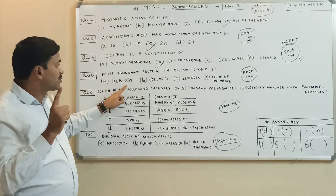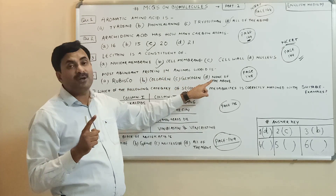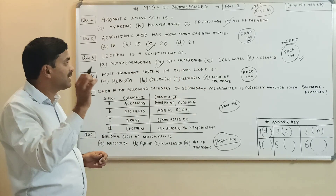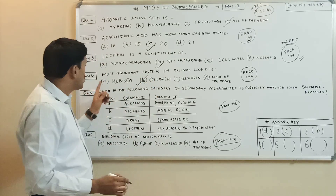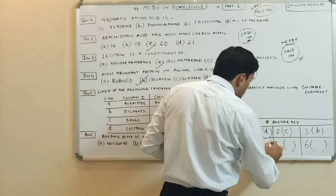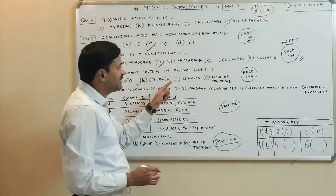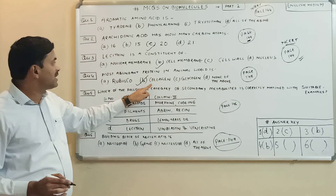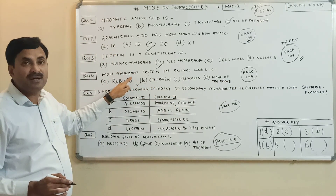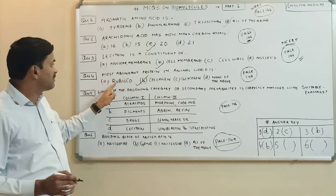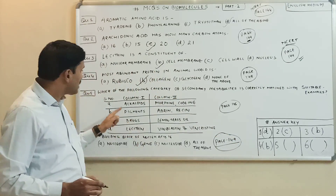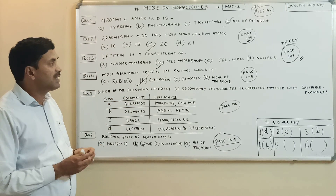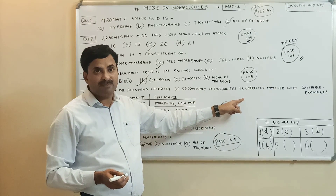Now, the most abundant protein in the animal world — is it rubisco, collagen, glycogen, or none of the above? You must know that the most abundant protein in the animal world is collagen. It is clearly mentioned on page number 148 of NCERT that collagen is the most abundant protein in the animal world. So the answer to question number four is option B.